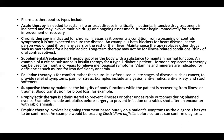Supportive therapy maintains the integrity of body functions while the patient is recovering from illness or trauma — for example, blood transfusion for blood loss. Prophylactic treatment is given to prevent illness or disease. It is administered to prevent illness or undesirable outcomes during planned events — for example, giving antibiotics before surgery to prevent infection, or a rabies shot after a dog bite. Empiric therapy involves beginning treatment based purely on patient symptoms before the diagnosis has been confirmed.